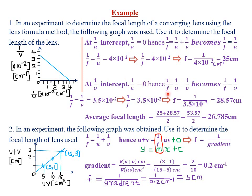At the 1/v intercept, 1/u = 0. Hence the lens formula becomes 1/f = 0 + 1/v, so 1/f = 1/v. The graph cuts the 1/v intercept at 0.35, and multiplying by 10⁻² gives 1/f = 3.5 × 10⁻² per centimeter.